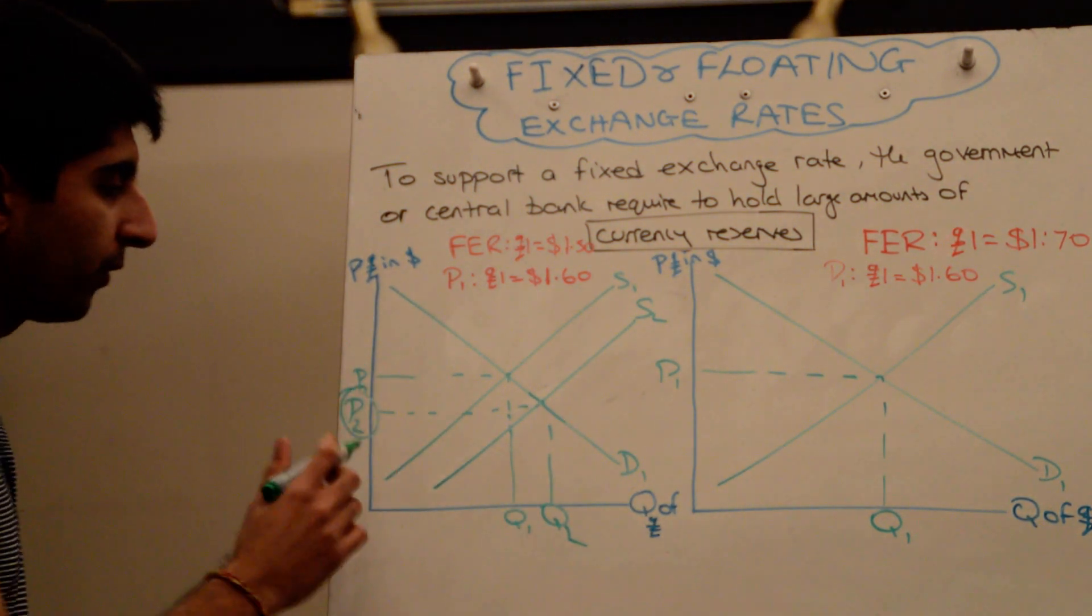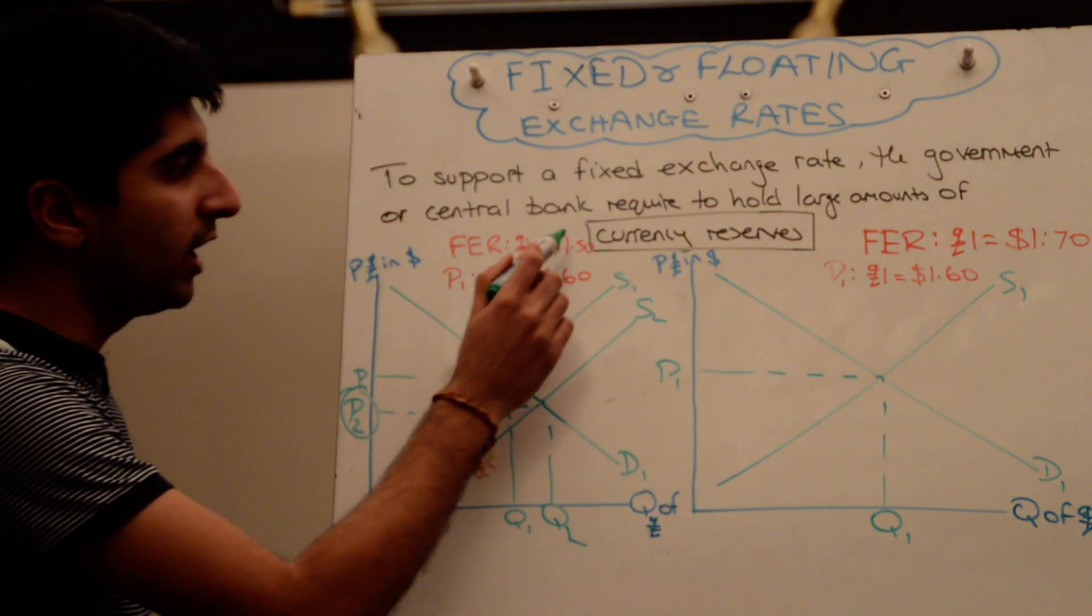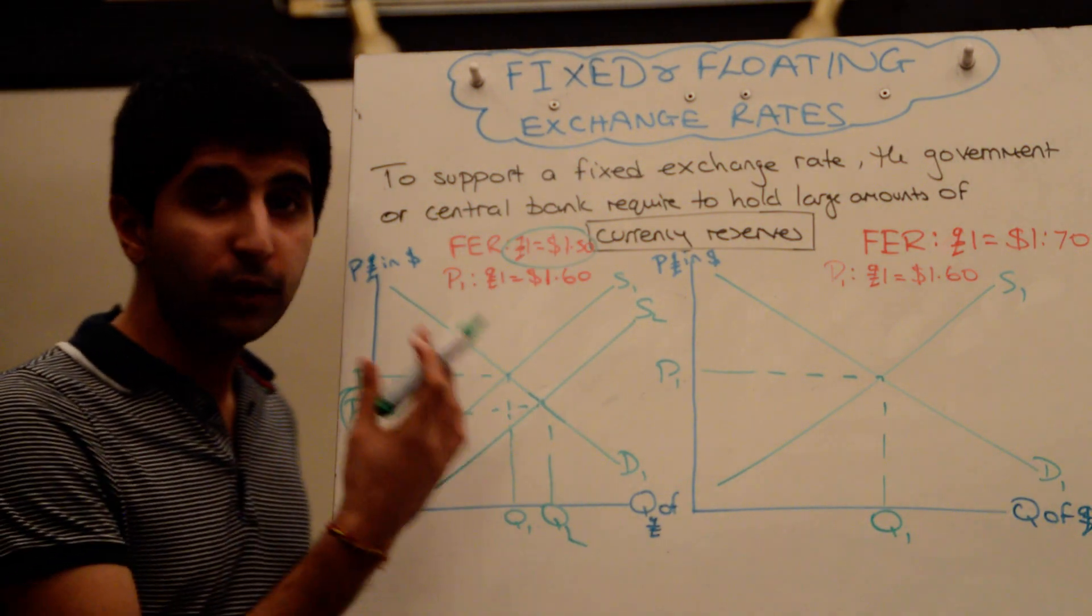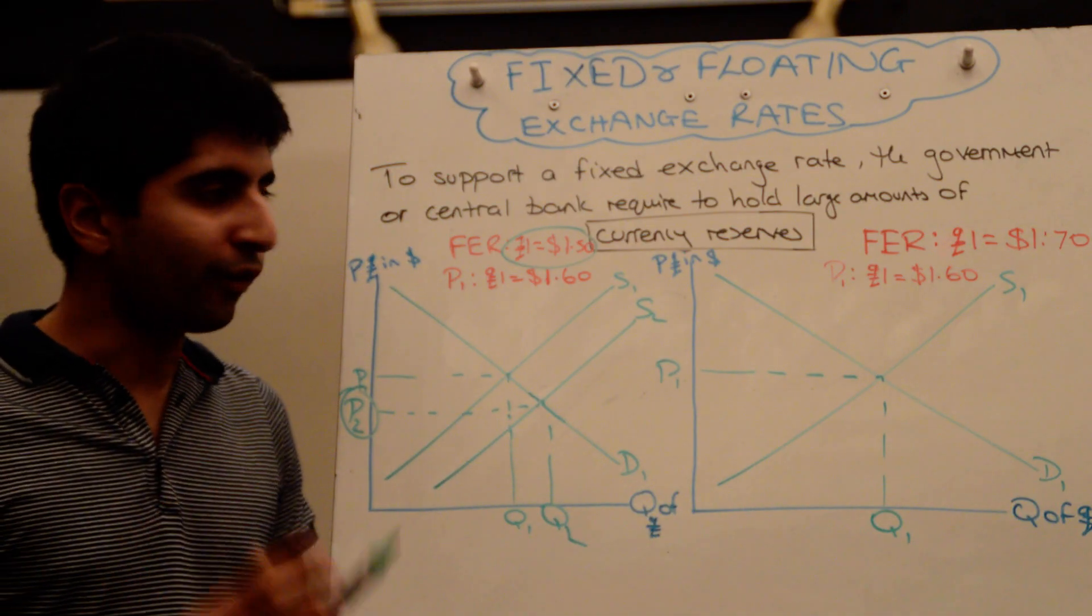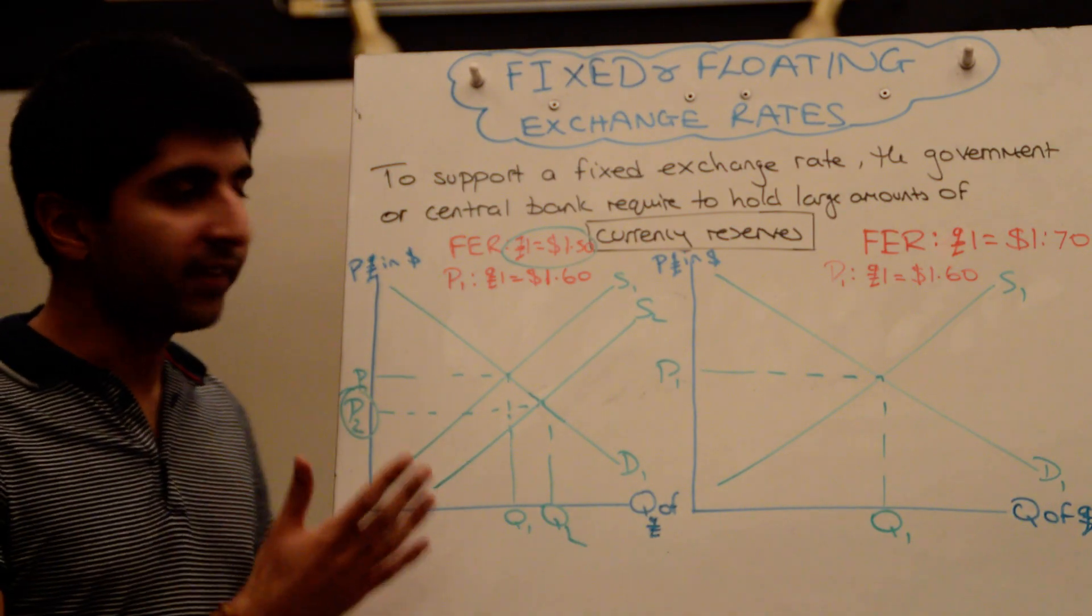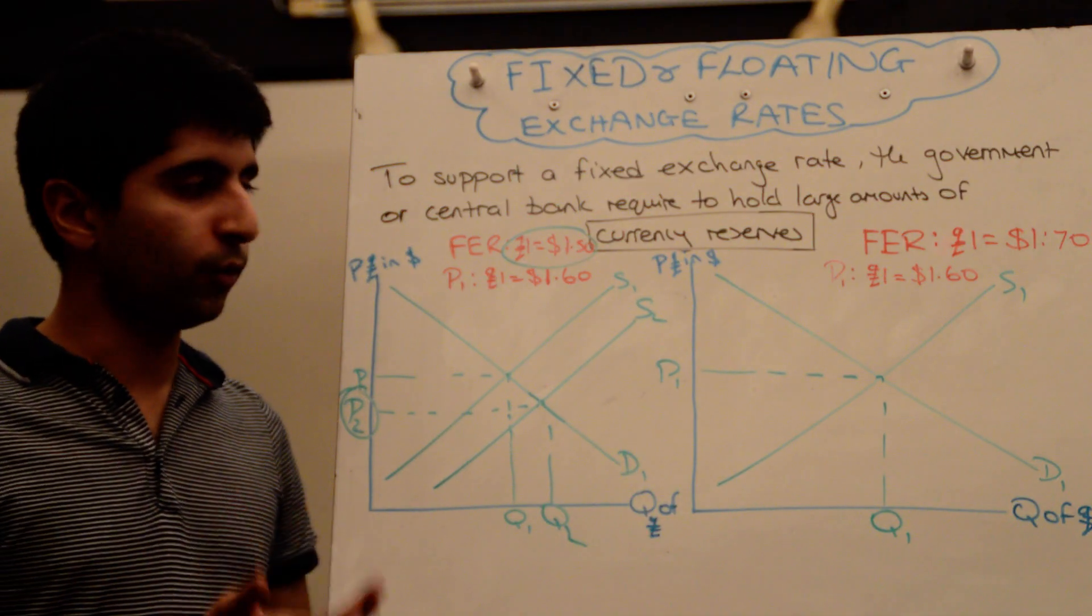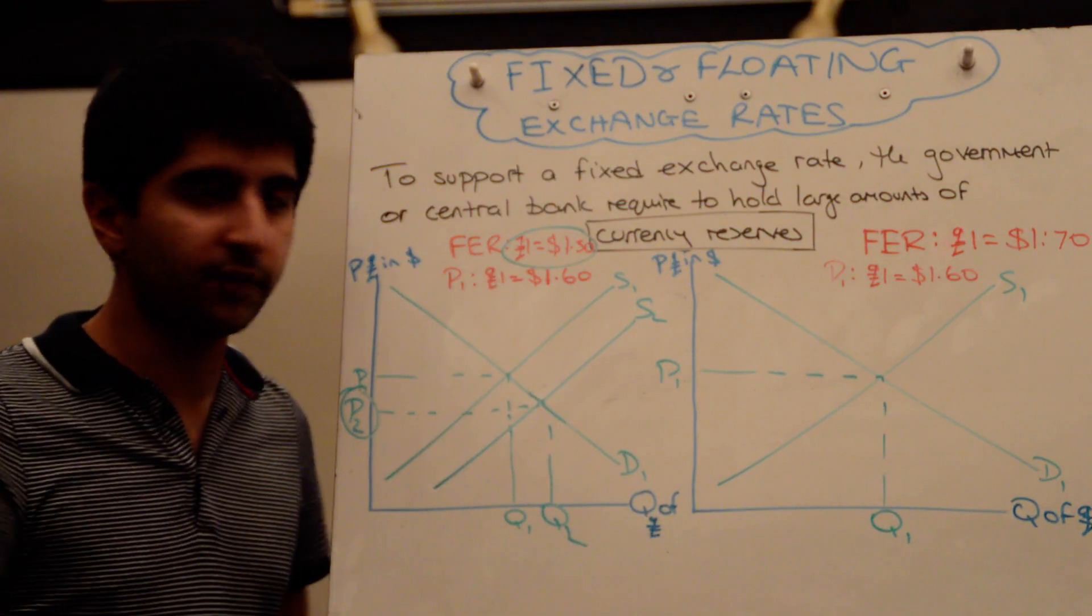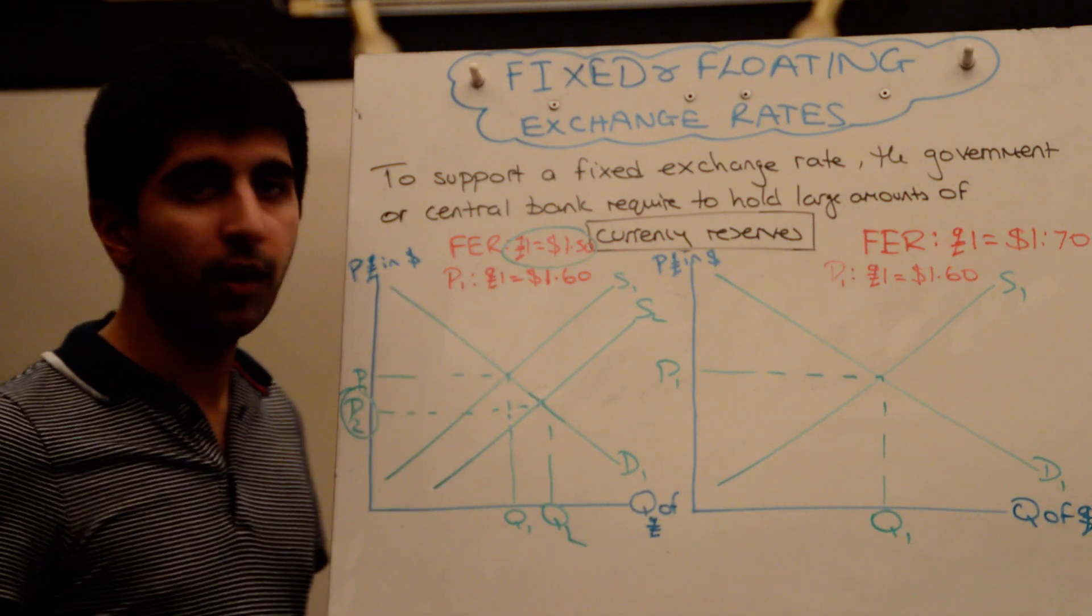And, hopefully, P2, now, the reduced value of the pound exchange rate, should equal $1.50, one pound to $1.50. So, that's what a government or authorities can do if they fear that the exchange rate is going to rise, or that the exchange rate is already rising when there is a fixed exchange rate. So, that's how you can reduce the value of the exchange rate when there is pressure on it rising.